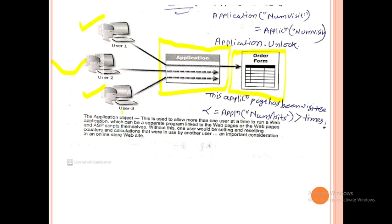The counter variable is accessible by user3. When user3 accesses it, the counter variable is incremented again. Before incrementing, the lock method is called, so the application object or counter variable is locked by user3, and user1 and user2 cannot access this form. This is the basic idea behind the Application object — it ensures that at a given time only one user can access a particular variable or form.